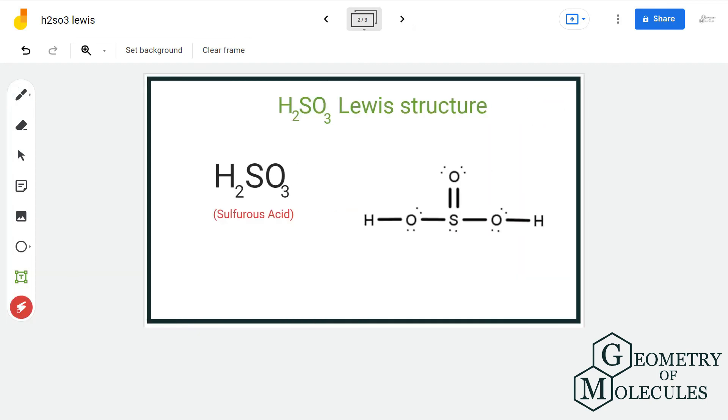And for sulfur, we will have 8 bonding electrons divided by 2, that will give us a formal charge of 0. This way all our atoms present in this molecule have 0 formal charge, and we can say that this is the final Lewis structure of sulfurous acid.